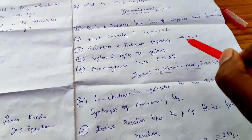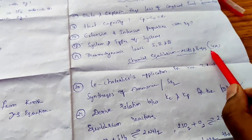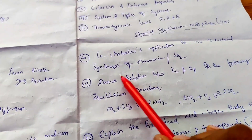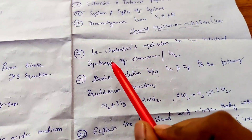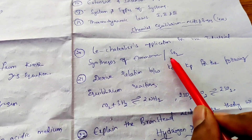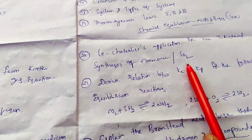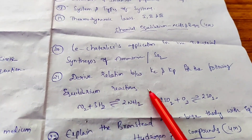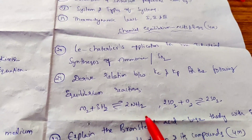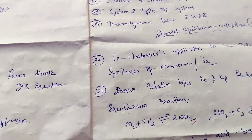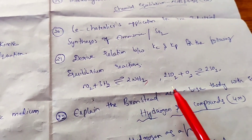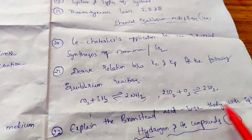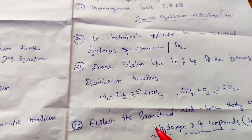From Chemical Equilibrium and Acids and Bases chapter, 4-mark questions: The main question is the application of Le Chatelier's principle for the industrial synthesis of ammonia and sulfur dioxide. Next: Derive the relation between Kc and Kp for an equilibrium reaction. Also: Explain the Bronsted-Lowry acid-base theory with examples. From these three questions you have a chance to attempt one.